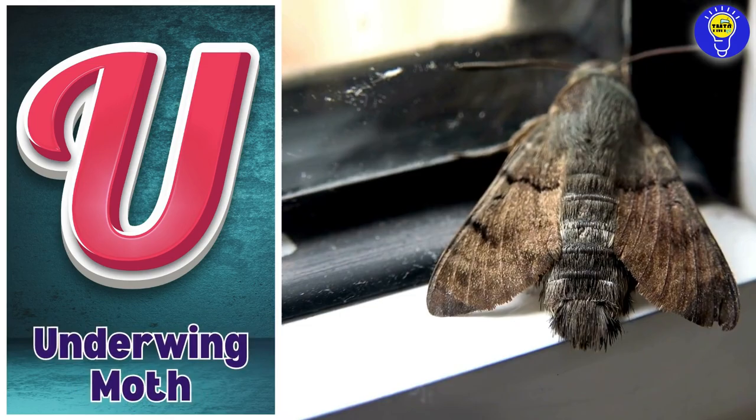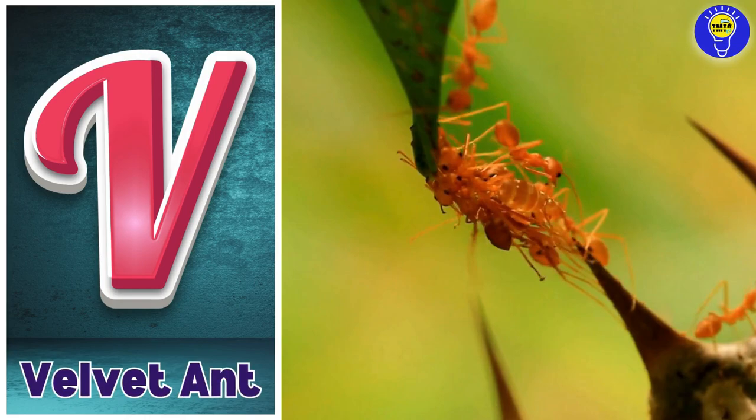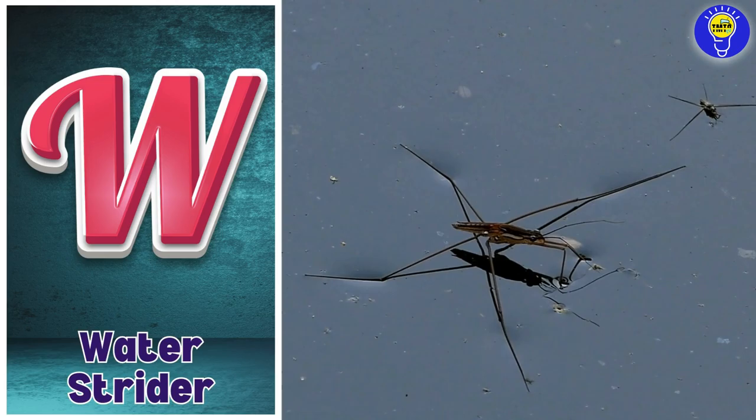V is for velvet ant. V, v, velvet ant. W is for water strider. W, w, water strider.